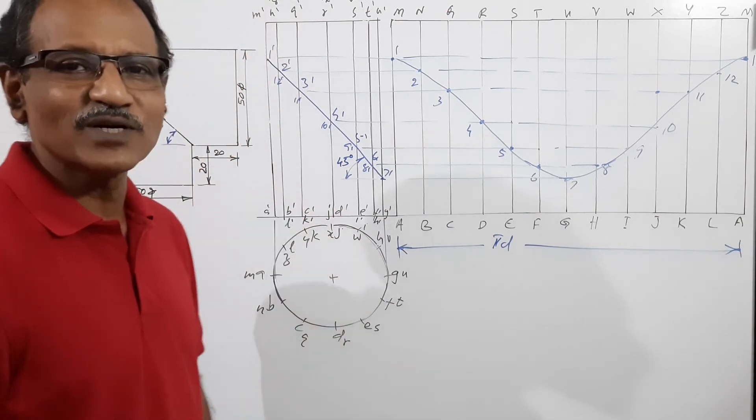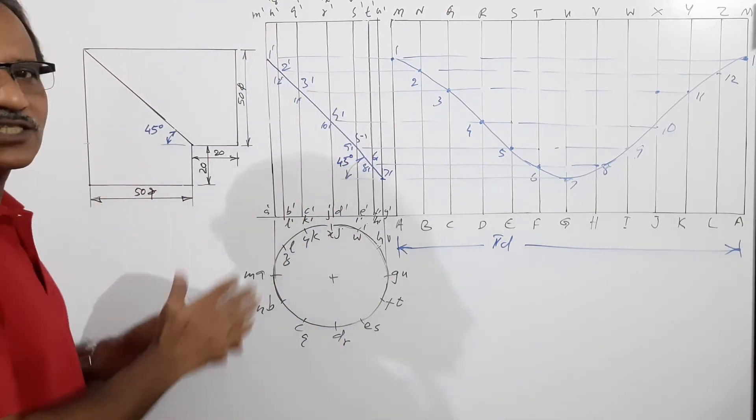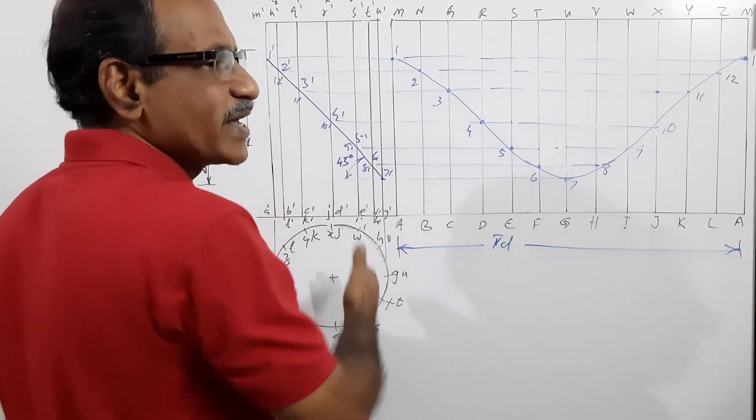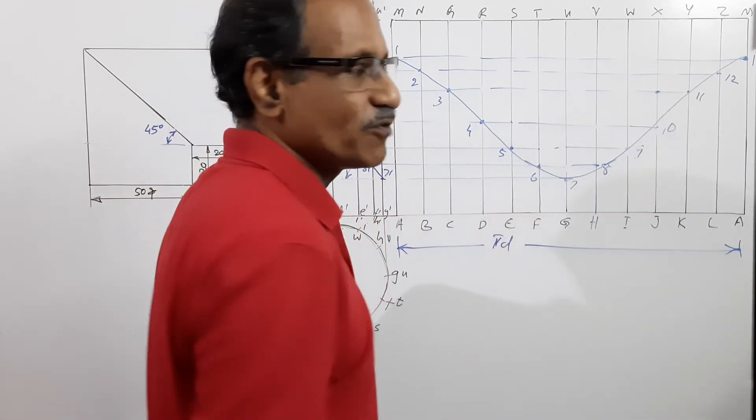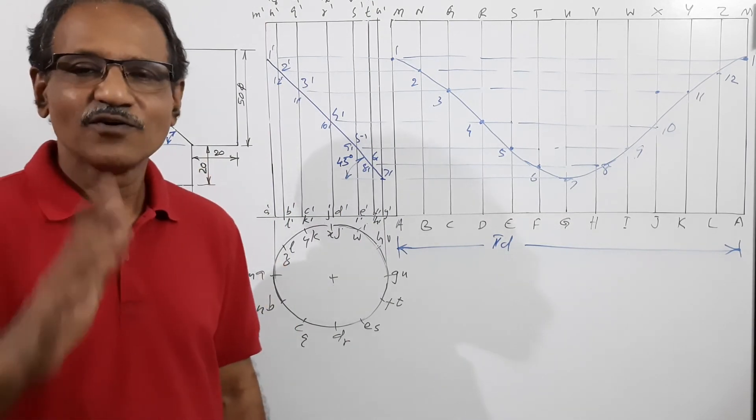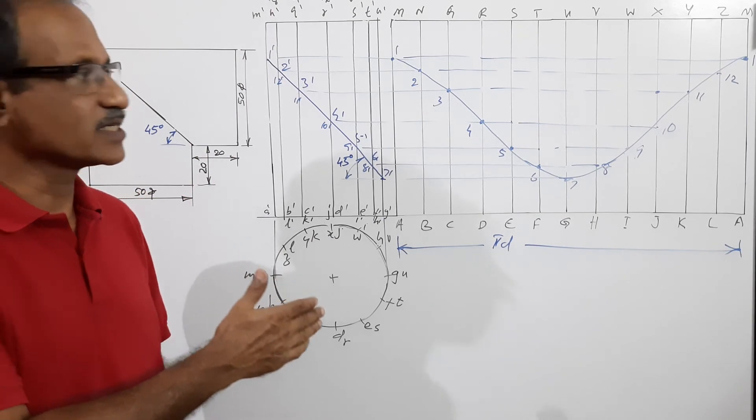Okay, it is a very simple question. This is the easiest way of drawing it. I have cut it into two pieces, kept one piece over the other so that it became a cylinder and we have drawn the development of a cylinder. Very simple question. You can draw it in 10 minutes.